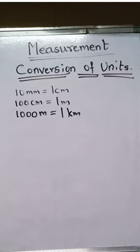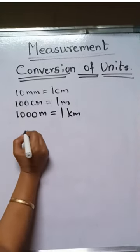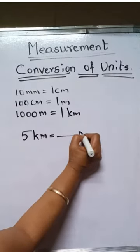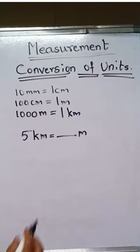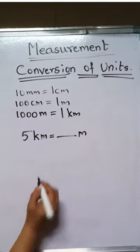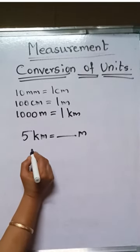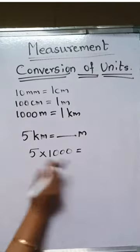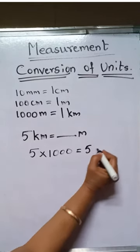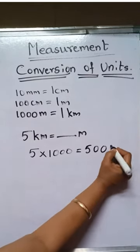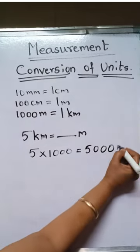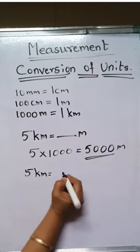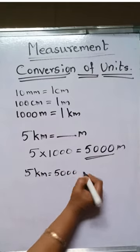Now let us convert 5 kilometers into meters. In 1 kilometer we know that 1000 meters are there. So 5 multiplied by 1000. 5 multiplied by 1000 is 5 ones are 5 and 5 zeros are 0, 5 zeros are 0, and 5 zeros are 0. This is 5000 meters. So 5 kilometers equal to 5000 meters.